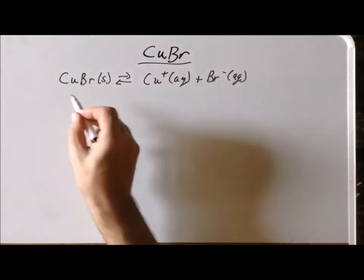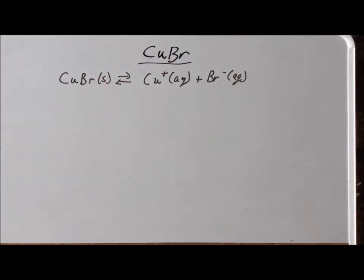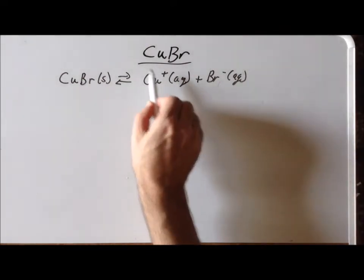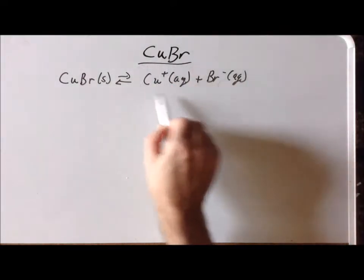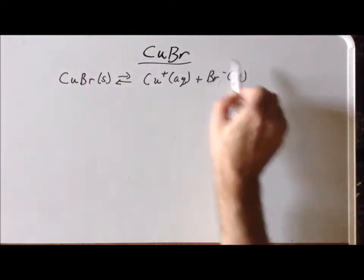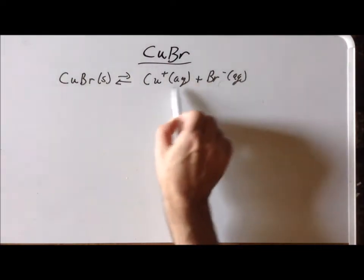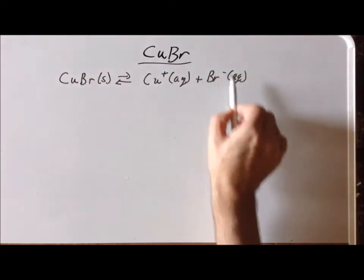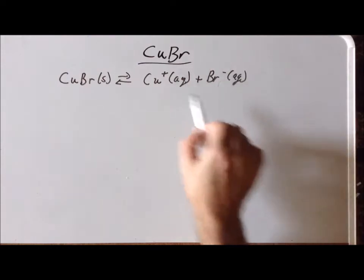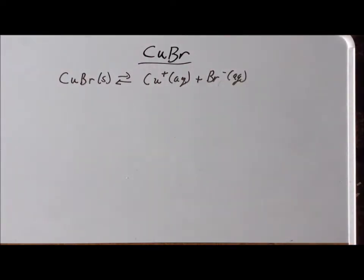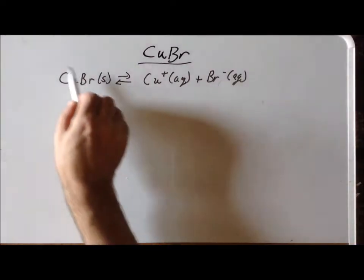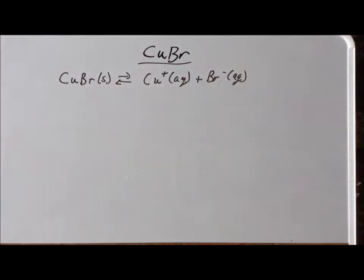So this is our overall equilibrium. One thing we want to emphasize is that we get one cation and exactly one anion. We notice that since we have a plus one charge and a minus one charge, we have charge balance because we began with a neutral compound.